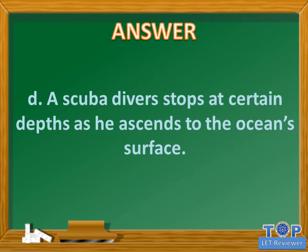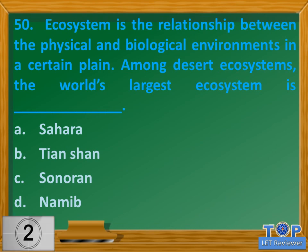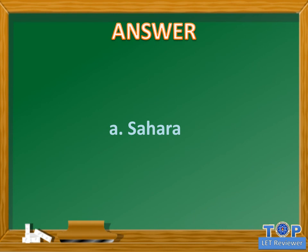Question number 50. Ecosystem is the relationship between the physical and biological environments in a certain place. Among desert ecosystems, the world's largest ecosystem is blank. A. Sahara. B. Tien Shan. C. Sonoran. D. Namib. Answer: A. Sahara.